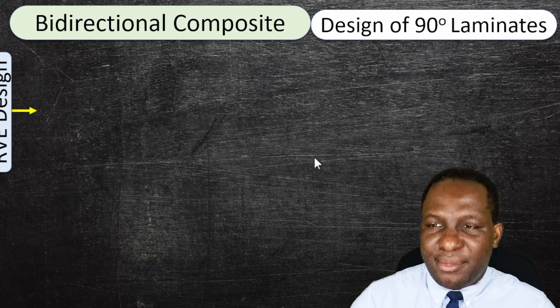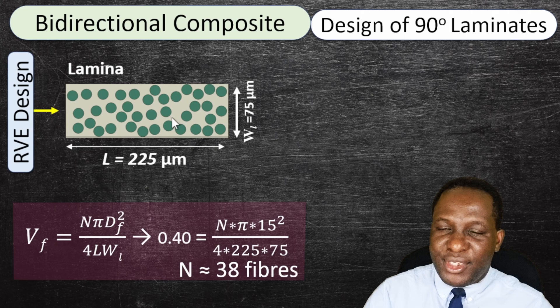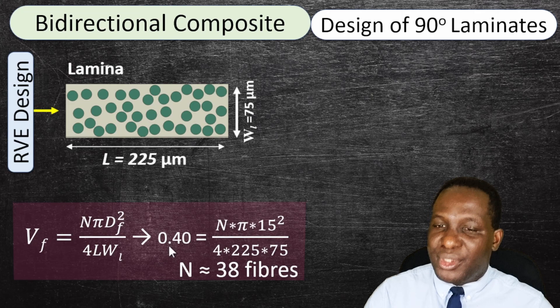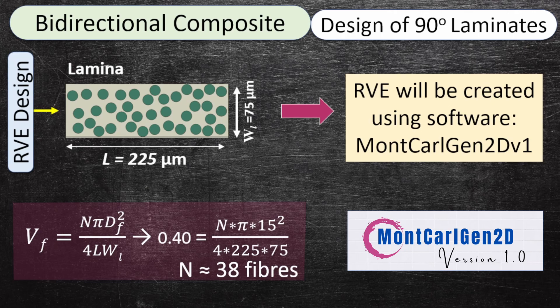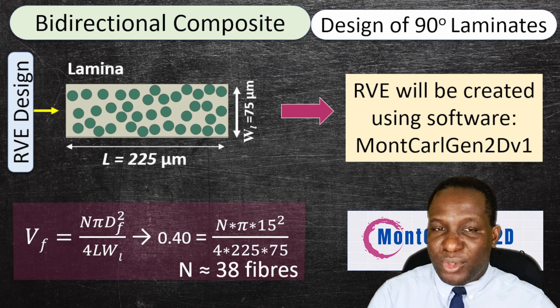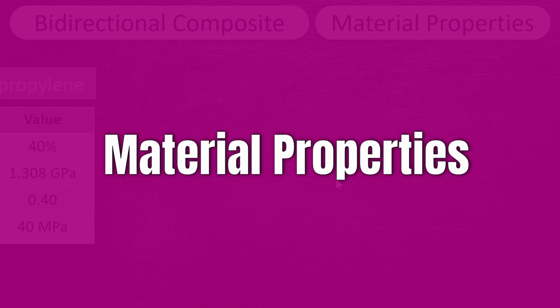For the 90-degree lamina, we're looking at the fiber through the thickness direction, viewing the fiber as randomly distributed in the window. Following the normal volume fraction calculation, we need up to 38 fibers to achieve a 40% volume fraction. The RVE will be created using a software I developed called Monte Carlo Gen 2D for random distribution of fibers — a link to get this software is in the description.